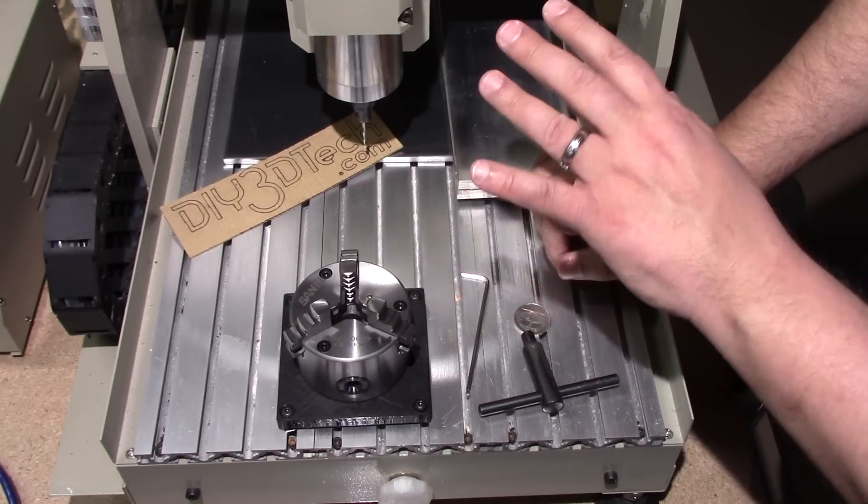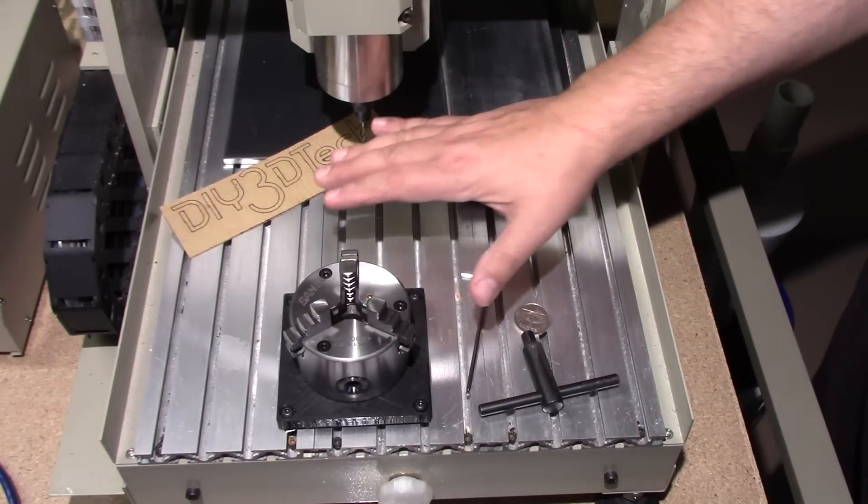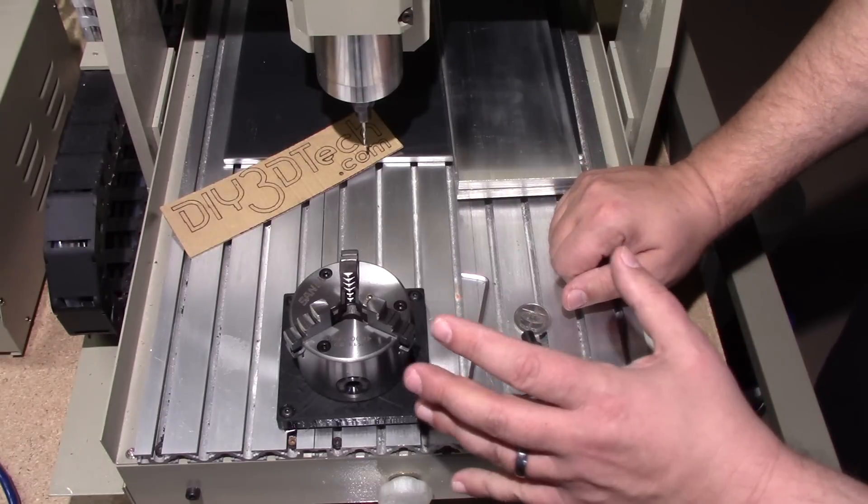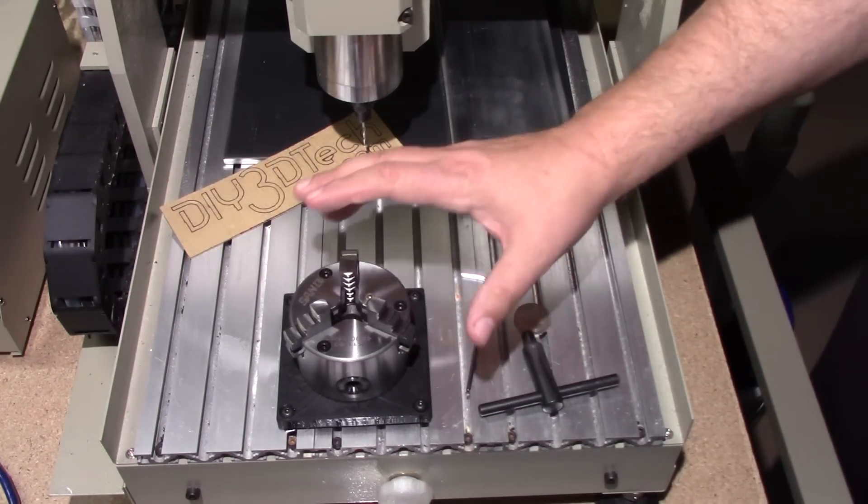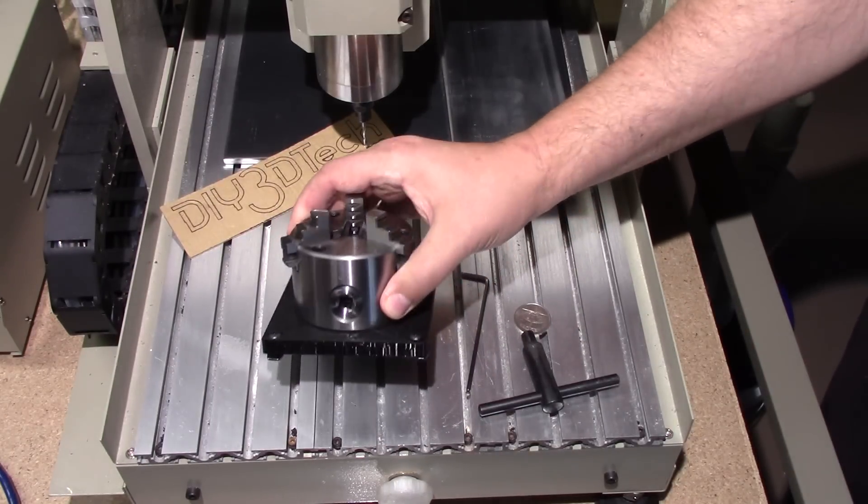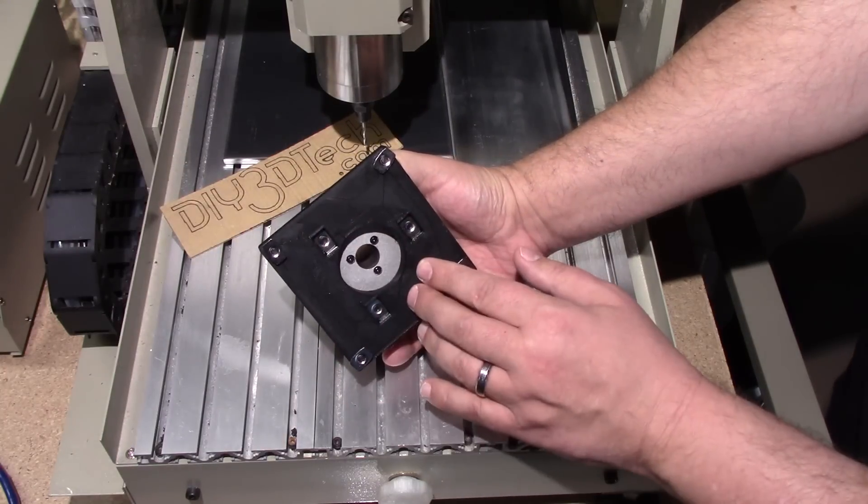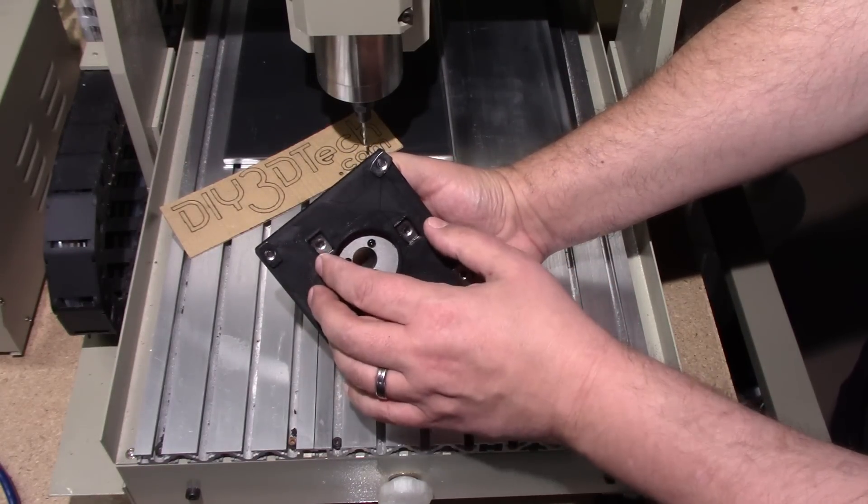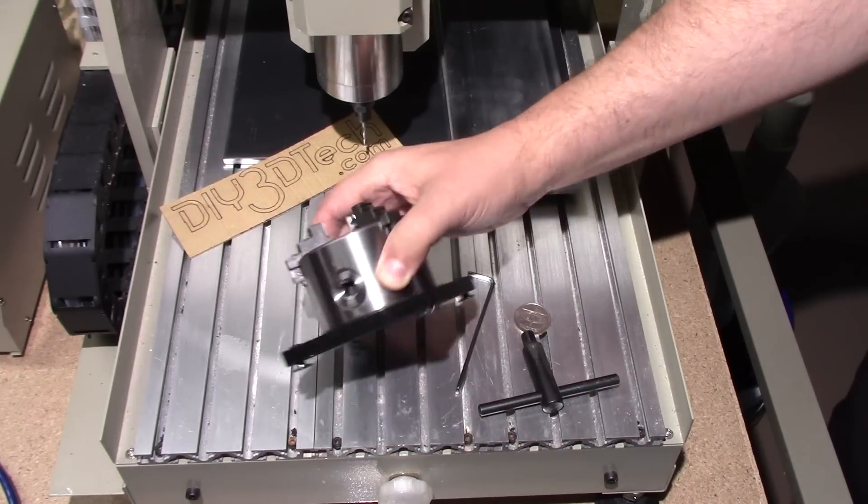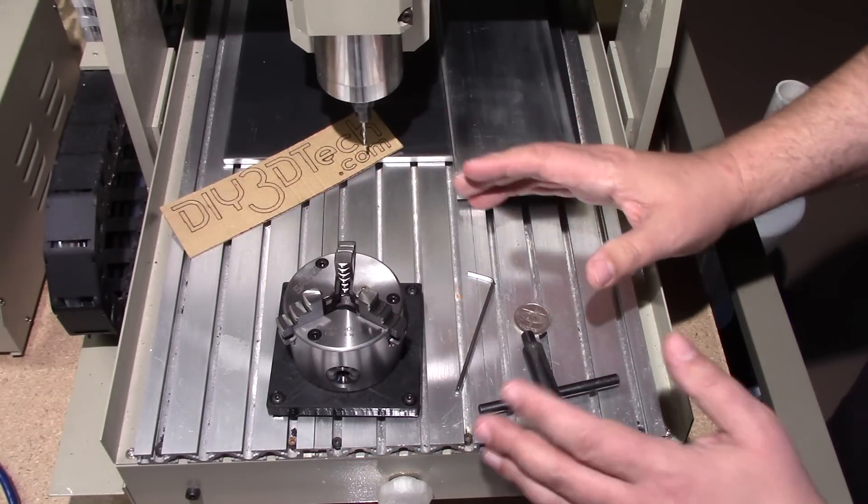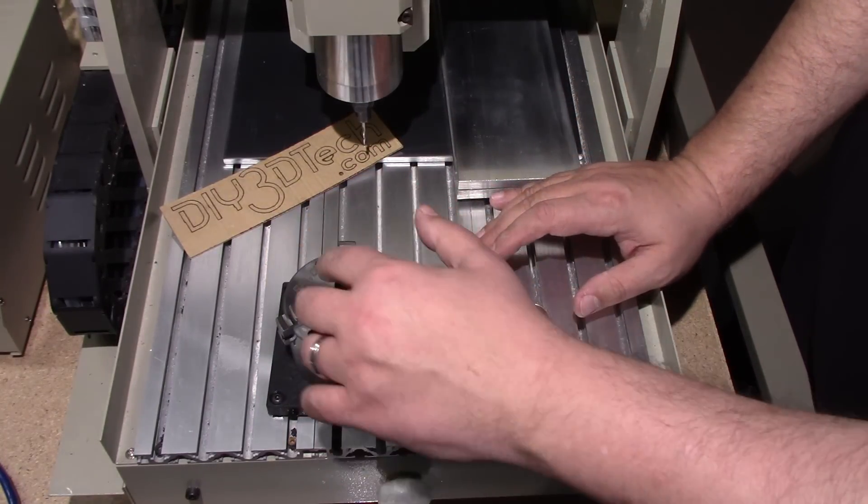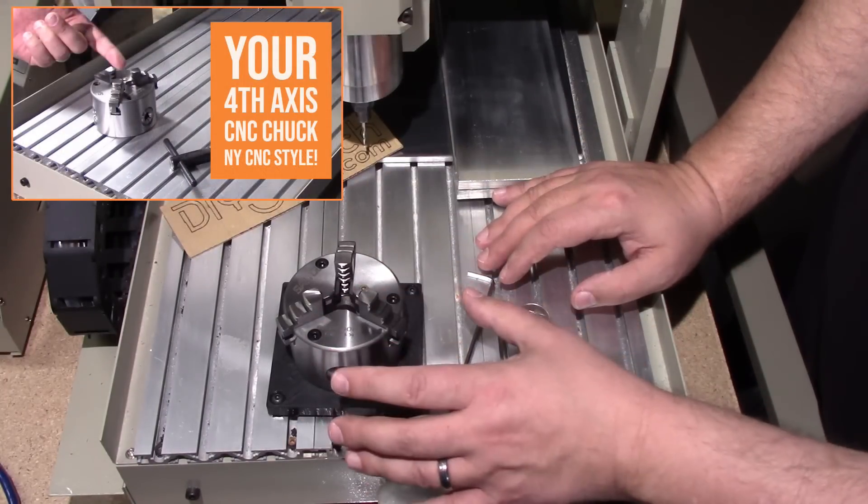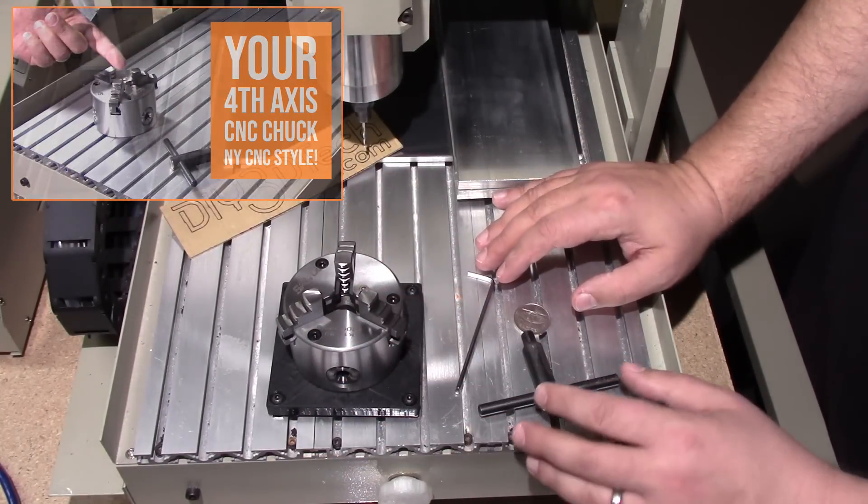So the idea is this takes and allows me to mount this three-jaw chuck. Notice down here I've used T-nuts to attach it to this base, and this base attaches to the center. Now a while ago I demonstrated how you could attach this with two bolts using these same T-nuts to this bed. This allows me to use all three and also gives me a little bit more adjustability to set things up.